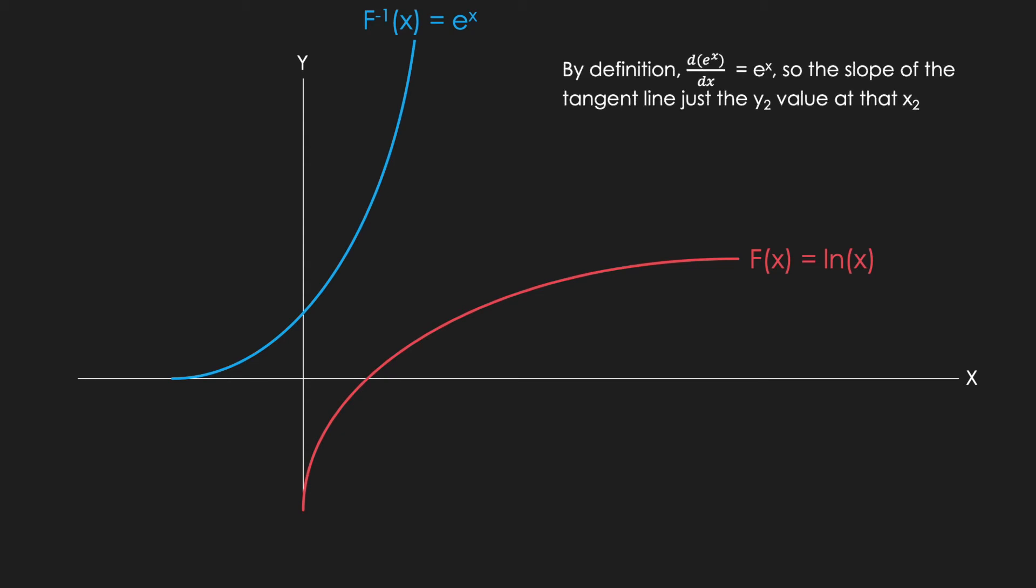In practice, this means that if I have a point, let's call it x2 comma y2, then the slope of the tangent line at this point is simply the y2 value of the coordinate pair. Interestingly, this suggests that the slope of the tangent line on our original function is reciprocal of that y2 value. Again, in practice, this means that if the point x1 comma y1 is reflected to become x2 comma y2, then the slope of that line is simply 1 over y2.